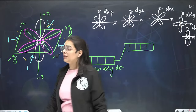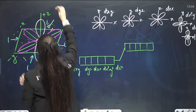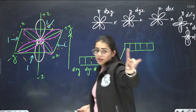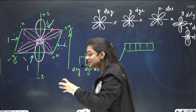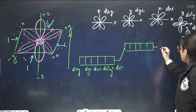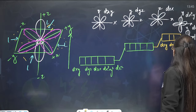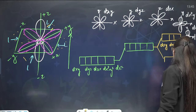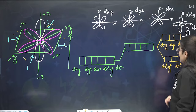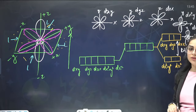In the tetrahedral complex, the ligands approach in between the axes — not along the axes. Therefore dxy, dyz, and dzx shall have more energy, while dx²y² and dz² will have less energy. The energy gap between these two sets is referred to as delta-T, where T stands for tetrahedral complex. This is the inverse of the octahedral case.